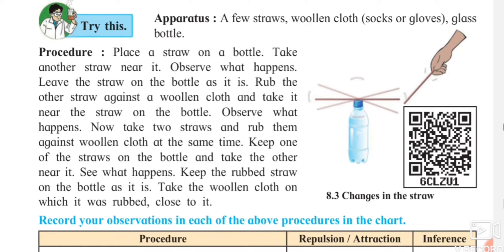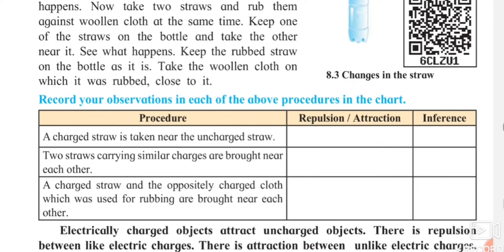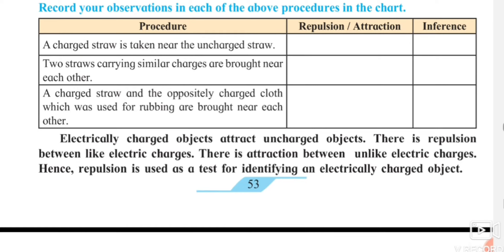The apparatus for the experiment includes a few straws, a woolen cloth, gloves, etc. A bottle is kept in front with a straw on top. Another straw is rubbed with a woolen cloth, and when brought near the first straw, it moves — the straws come close to each other. Sometimes you observe repulsion and sometimes attraction.